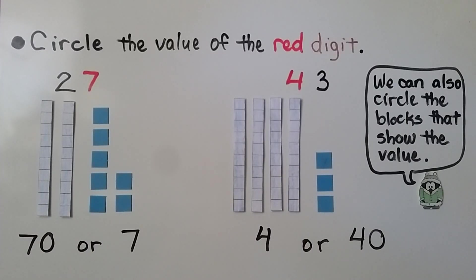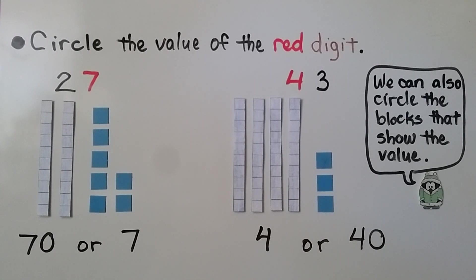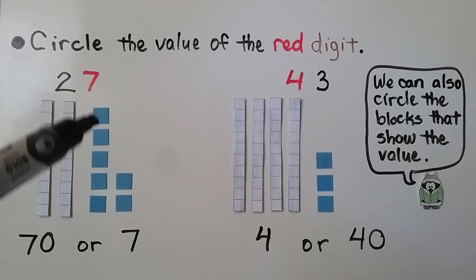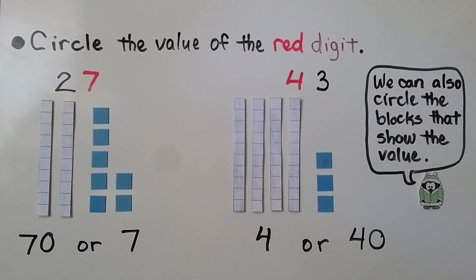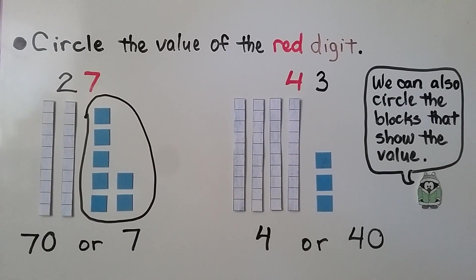We need to circle the value of the red digit. Here we have a 2 and a 7. The 7 is red. So what's the value of that 7 — is it 70 or 7? Here we have 2 in the tens place and 7 in the ones place. We could also circle the blocks that show the value. We know that this represents 7 ones, so the red 7 must represent 7 ones.